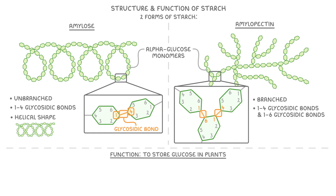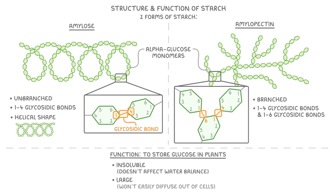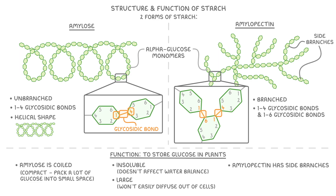The main function of starch is to store glucose in plants, and it has several features that make it ideal for this. Firstly, it's insoluble, so it doesn't affect the water balance of cells. It's also large, so it won't easily diffuse out of cells. As mentioned, amylose is coiled, making it compact, allowing plants to pack a lot of glucose into a small space. Amylopectin has many side branches, making it easy for enzymes to hydrolyse the glycosidic bonds and break off glucose for respiration.